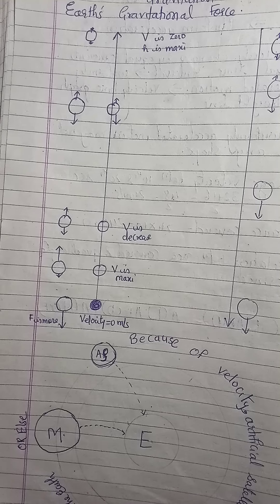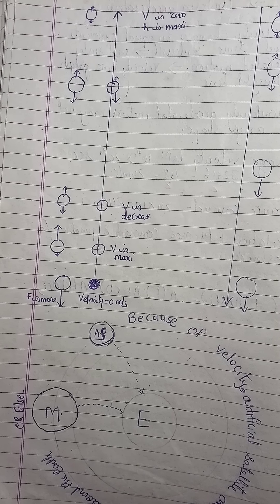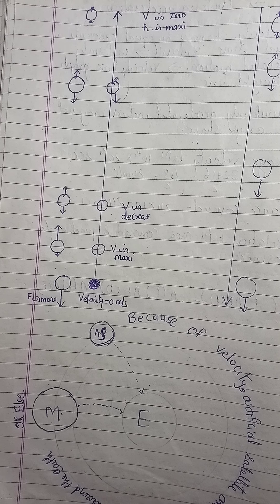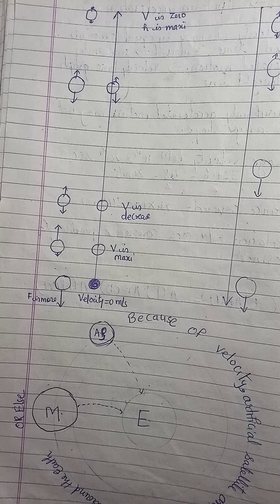A question arises: if the Earth is attracting the Moon and the planets, why are the Moon and the planets not falling on the Earth? The reason is that the Moon and other artificial satellites are revolving around the Earth's orbit with great speed, and this speed is balancing the Earth's force of gravity.